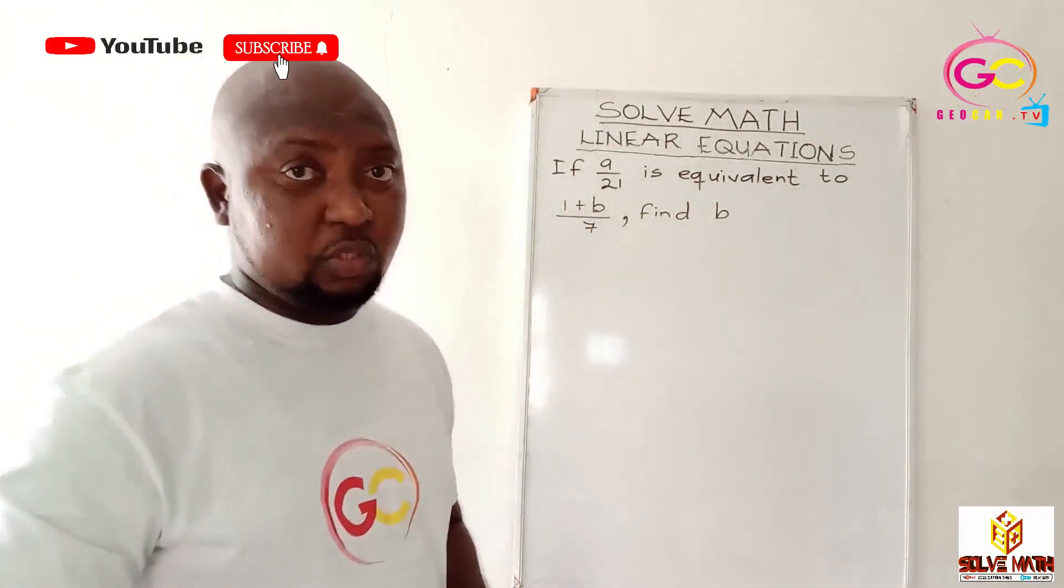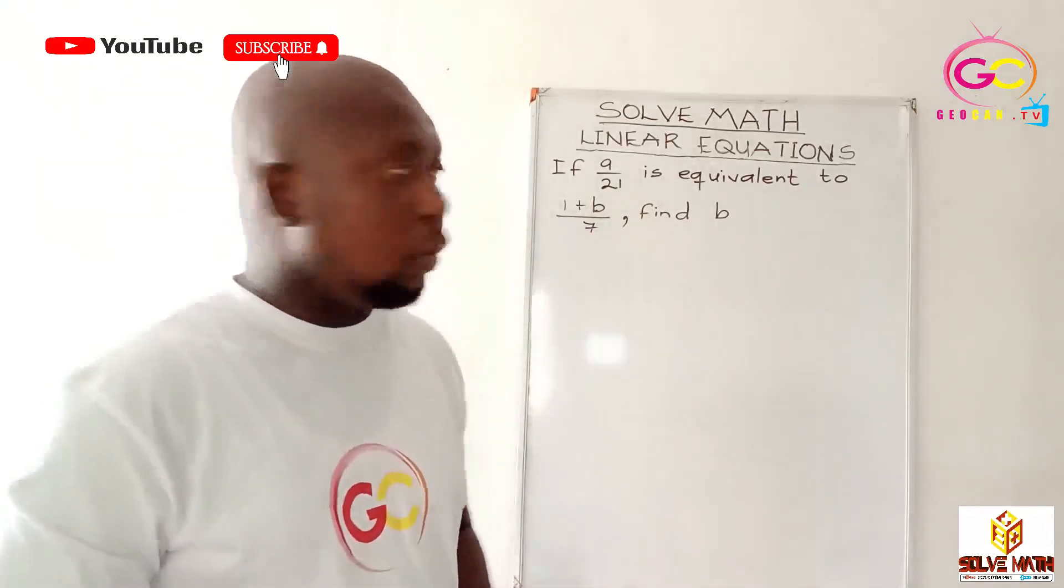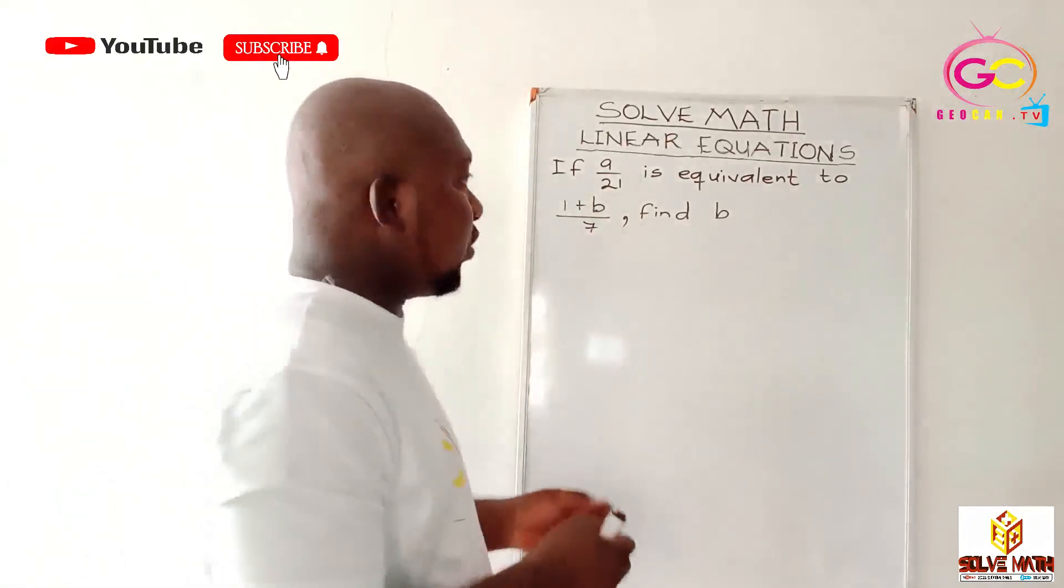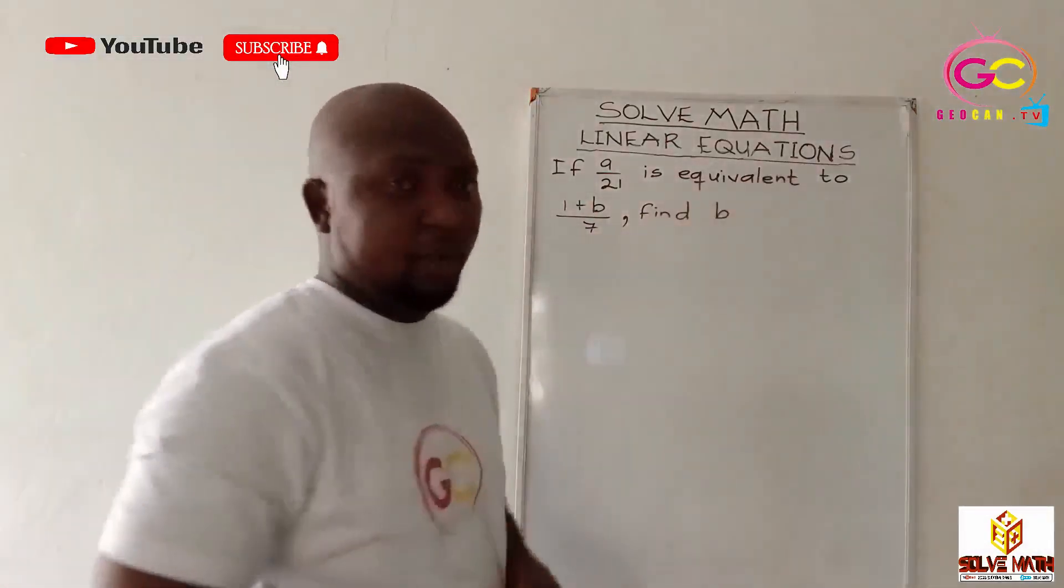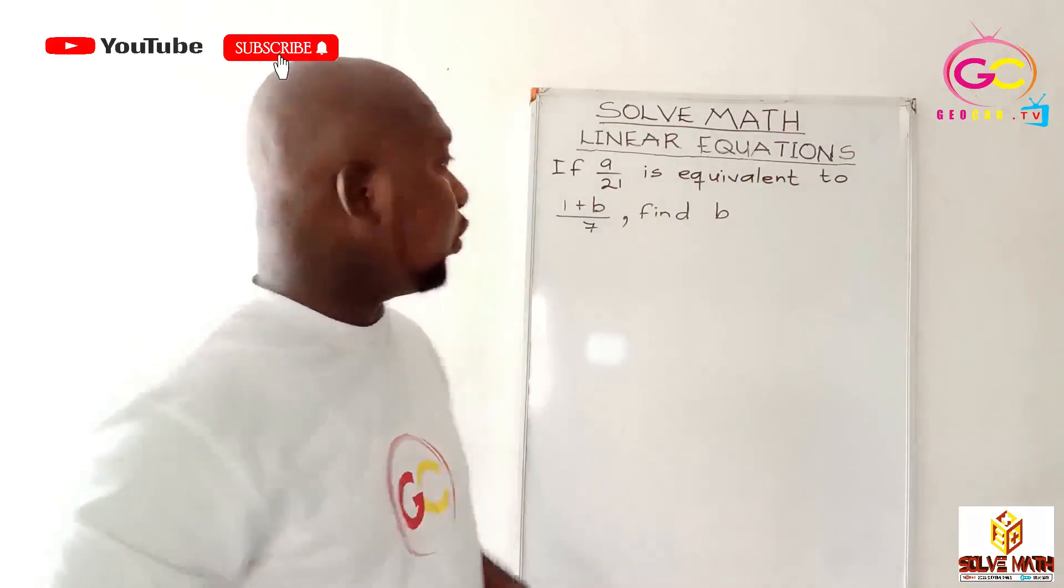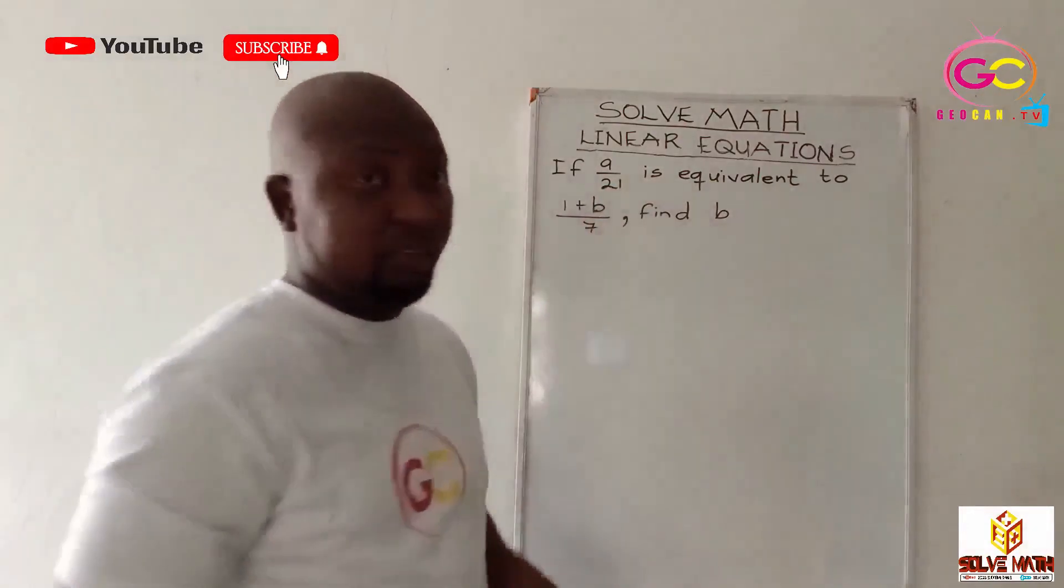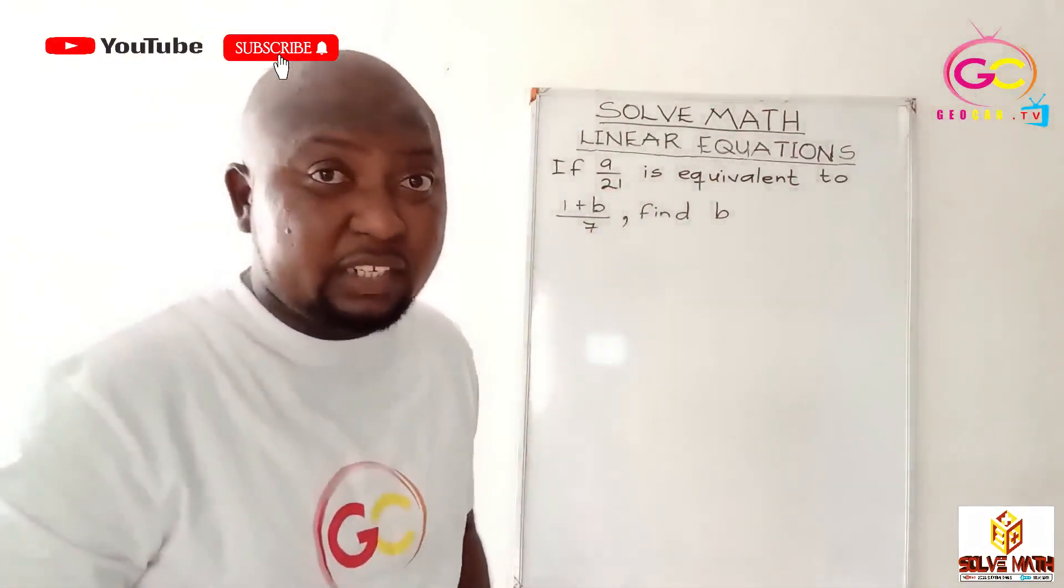Yes, we are supposed to find the value of B. B is a number. So in this context, what we mean by equivalence is equal to. That is what it means. Equivalence means equal to. So what we mean is if 9 over 21 is equal to 1 plus B all over 7. That is what the question means.